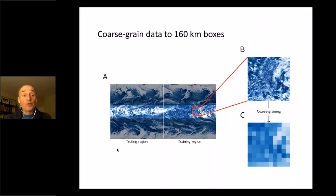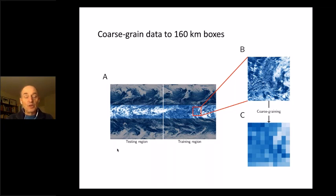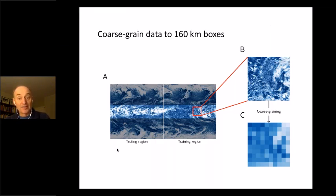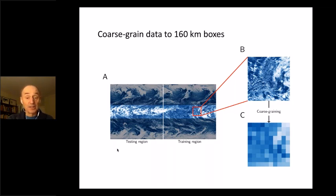We take this simulation and for each three-hour chunk we coarse-grain the four-kilometer resolution data to 160-kilometer boxes, which is the resolution of our target global climate model. We chose 160 km because the decorrelation time of precipitation over 160 km boxes is about six hours, which is bigger than the three-hour sampling time. We take just the tropics of the simulation, divide it into 160 by 160 km boxes, average over those boxes, and get the coarse-grained picture.